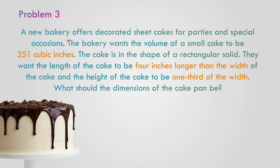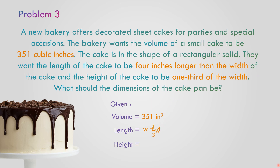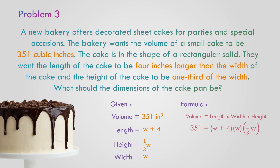Problem number 3. A new bakery offers decorated sheet cakes for parties and special occasions. The bakery wants the volume of a small cake to be 351 cubic inches. The cake is in the shape of a rectangular solid. They want the length of the cake to be 4 inches longer than the width, and the height of the cake to be one-third of the width. What should the dimensions of the cake pan be? The volume is 351 cubic inches, the length is w plus 4, the height is one-third w. The formula for volume is length times width times height.